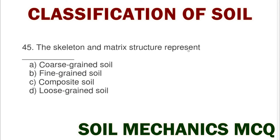Next question: the skeleton and matrix structure represent option A coarse grain soil, option B fine grain soil, option C composite soil, option D loose grain soil. The correct answer is option C composite soil.